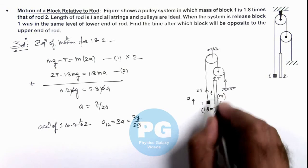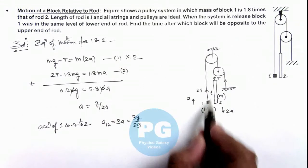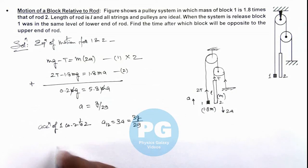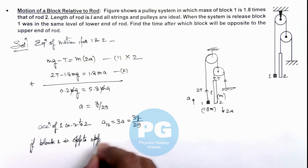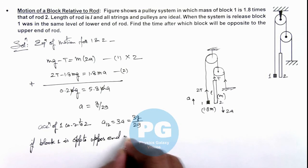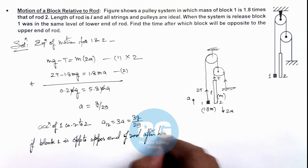So if the rod is of length l, we are required to find the time after which block will be opposite to the upper end of the rod. So here we can write: if block 1 is opposite to upper end of rod after time t...